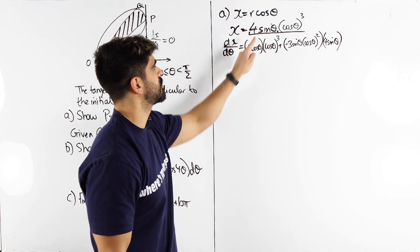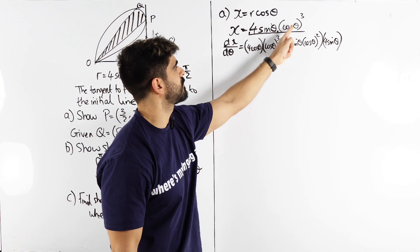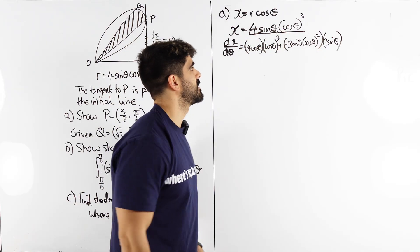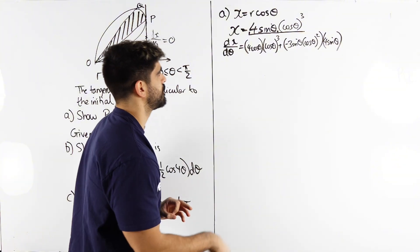Just to recap differentiate the first term times the second plus differentiate the second times the first. And we're making that equal zero. Let's clean this up.